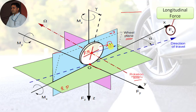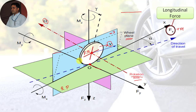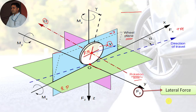Omega indicates the angular velocity of the tire. The force component in the direction of wheel travel is sometimes called the tractive force. Considering the forward direction of travel as positive, FX in the forward direction is considered a positive tractive force. If FX is in the negative X direction, it is considered a negative tractive force.